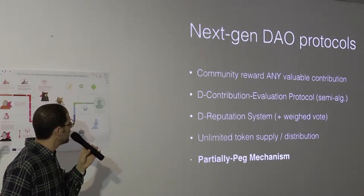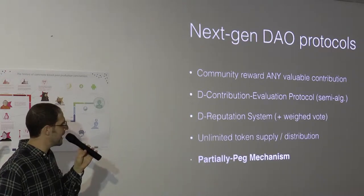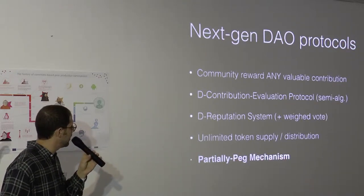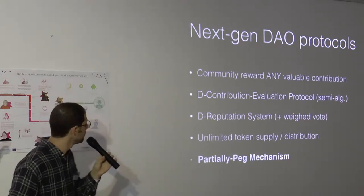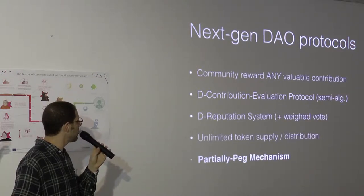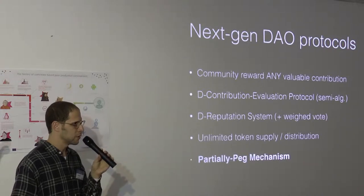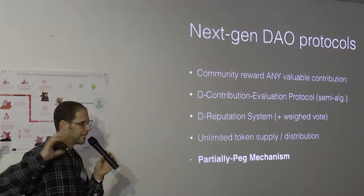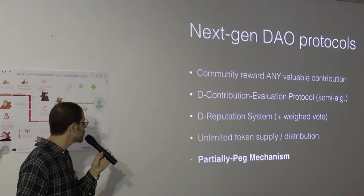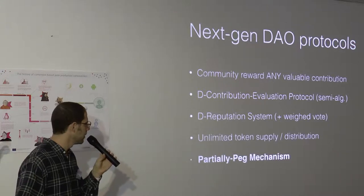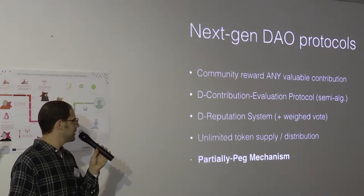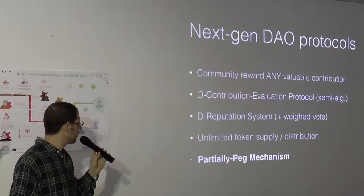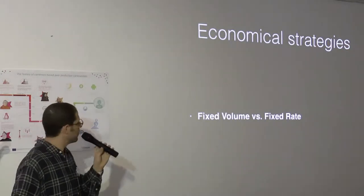Very briefly, I will tell you about the next generation DAO protocols. Basically you should have a protocol that says that the community rewards any valuable contribution. How to make that, that's a big, big question, which we worked on in the last year and feel that we are close to having a final answer, a systematic answer. Which means that you need to have a decentralized contribution evaluation protocol, semi-algorithmic. I'm doing action A. Now the rest of the network can do feedback on my action. And the network should be able to sum up this feedback and assign a value. Of course there's a central reputation system with decentralized weighting, weighted voting.